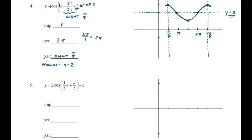Those dotted lines are not part of the function and don't need to be in your final graph, but they're really good resources for knowing where to place the function when graphing. The distance from the middle to the lowest point is 1, the distance to the highest point is 1, and the period is still 2π — just shifted to the right.